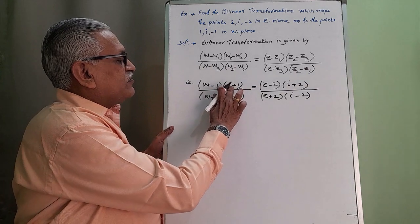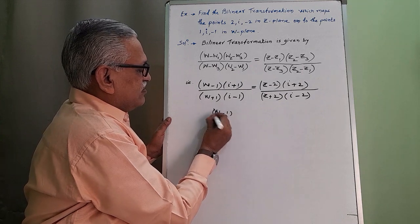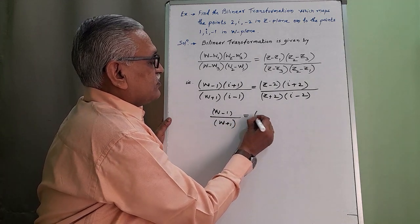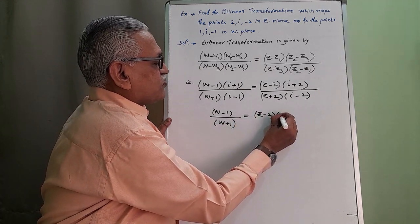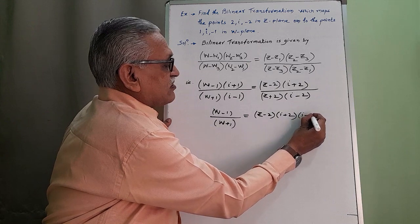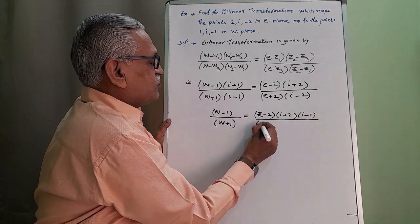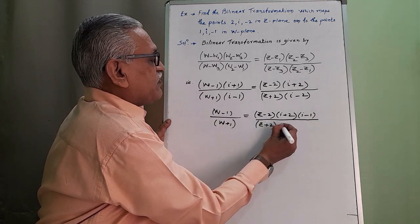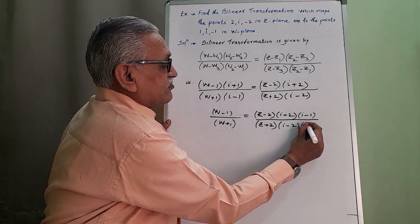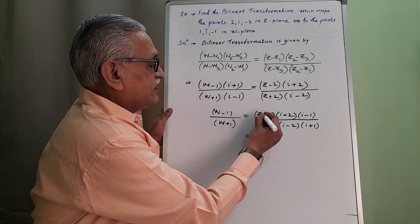Transferring the term (i plus 1) upon (i minus 1) to the right-hand side, we get (w minus 1) divided by (w plus 1) equals (z minus 2) into (i plus 2) multiplied by (i minus 1), whole divided by (z plus 2) multiplied by (i minus 2) into (i plus 1).